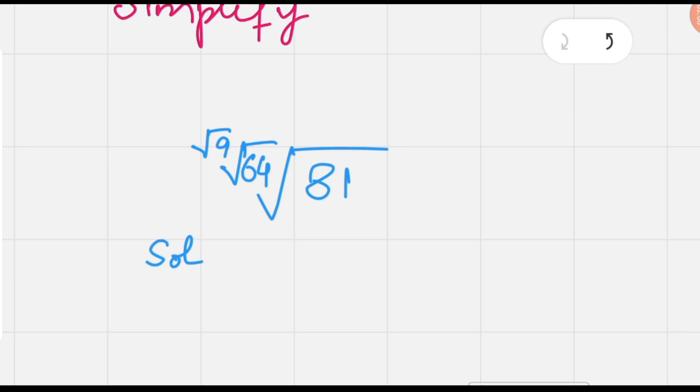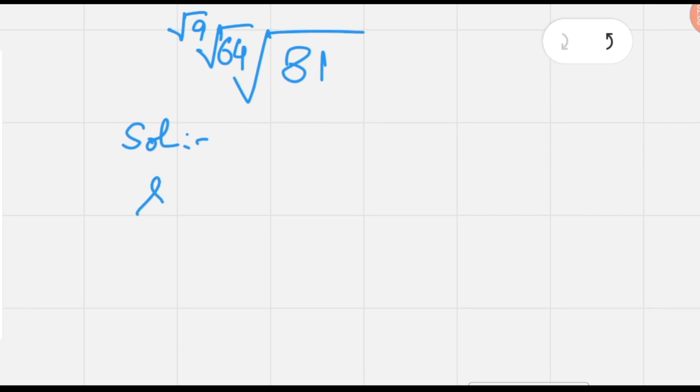Hi everyone, in this video we are going to simplify a very unique calculation: radical 81 to the index 64 to the index radical 9. In place of radical 9, we simplify it as the root of 9 is 3, so we have a new form of the calculation: radical 81 to the index 64 to the index 3.